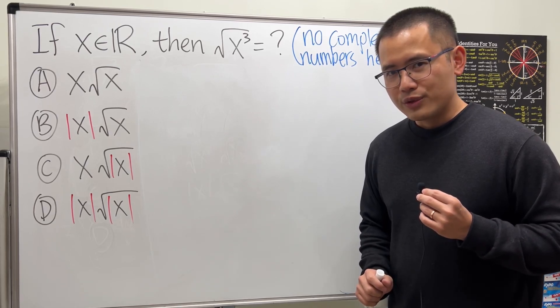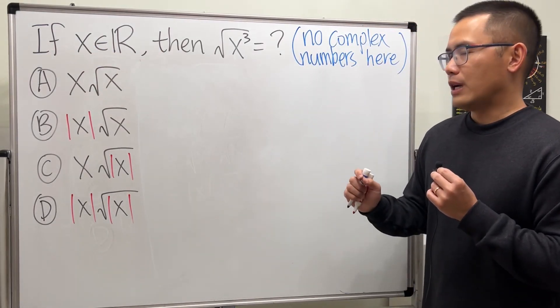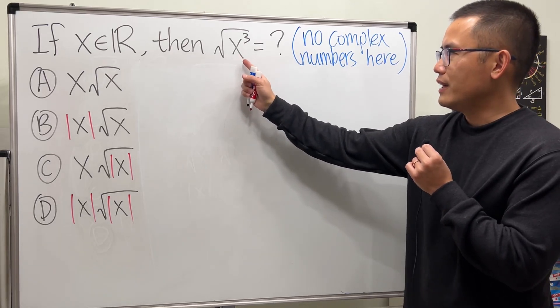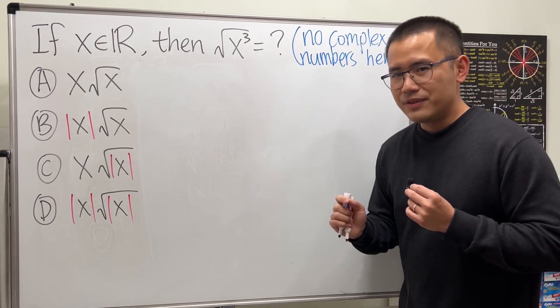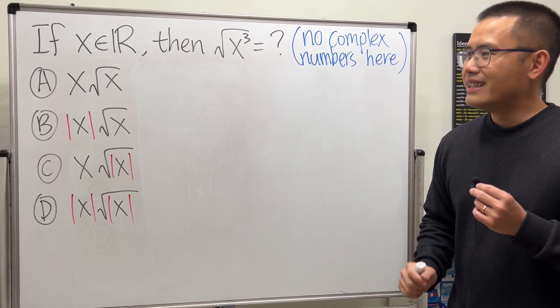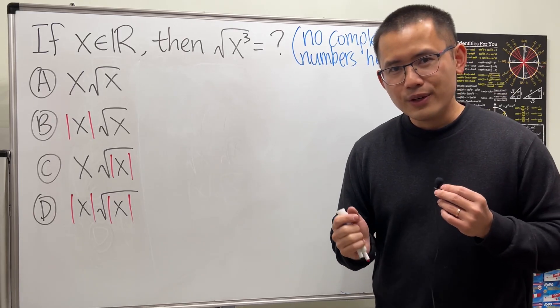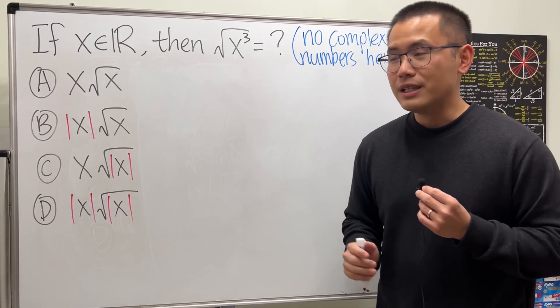So I really want to go over this question with you guys. Here we have x being a real number, and we would like to know how to simplify square root of x to the third power. In this video we are not going to touch on any complex number. We have these four options, and you know the deal - go ahead and pause the video and put down what you see in the comment first before you continue to watch the video. Done?